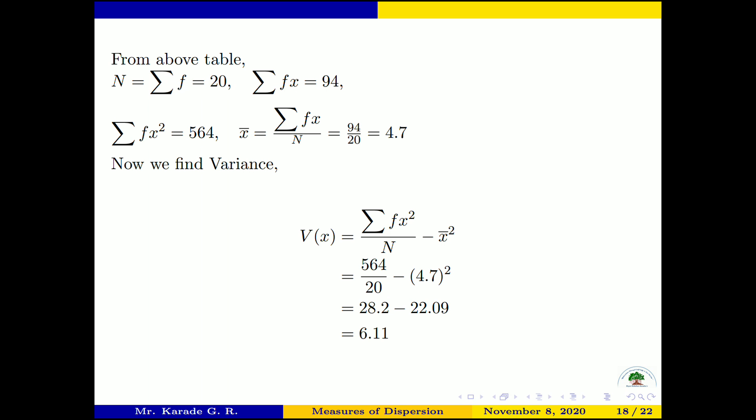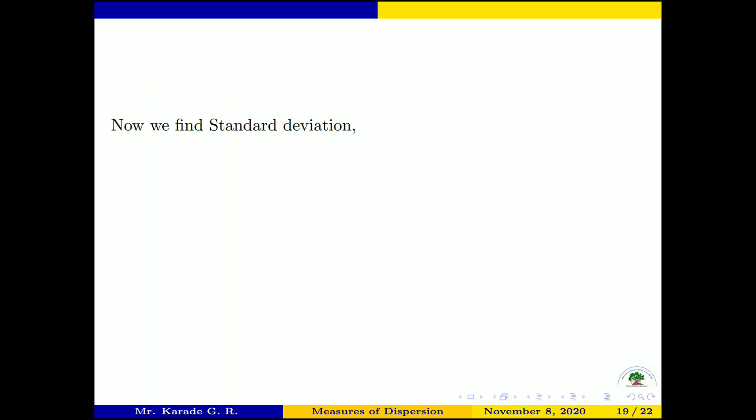Now we find the standard deviation. σₓ = square root of variance = square root of 6.11 = 2.472. This is the standard deviation for the given frequency distribution.